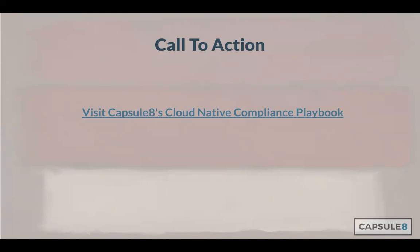Kevin asks: where is a good place to get a full breakdown of the control criteria? He's finding the AICPA website a bit difficult to navigate. If you download this presentation, there are hyperlinks including a link directly to the PDF that maps out all of these controls. There are multiple PDFs, but there is a single consolidated one. And again, we talk about the Rosetta Stone because these controls are from 2017 — they don't necessarily map easily to cloud native concepts and principles — but it is a single PDF and there's a link to it in this presentation.